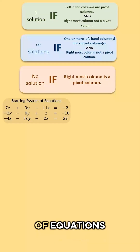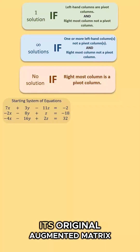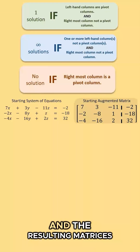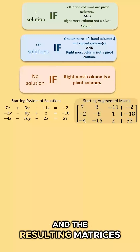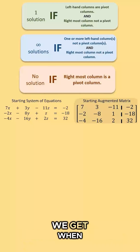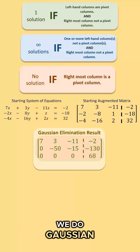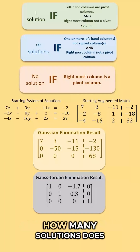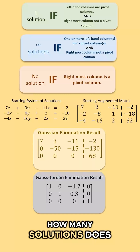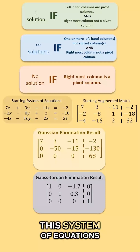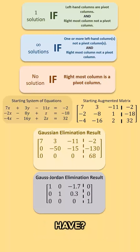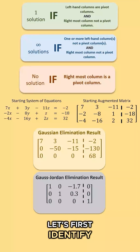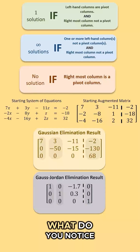Consider this system of equations, its original augmented matrix, and the resulting matrices we get when we do Gaussian or Gauss-Jordan elimination. How many solutions does this system of equations have? Well, let's first identify our pivot and pivot columns.